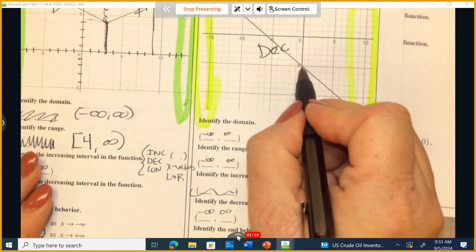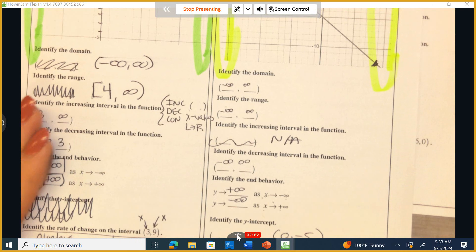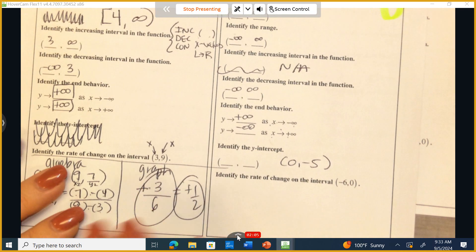We do see a y-intercept here. Make sure that you are writing it down correctly. It's (0, -5), not (-5, 0).